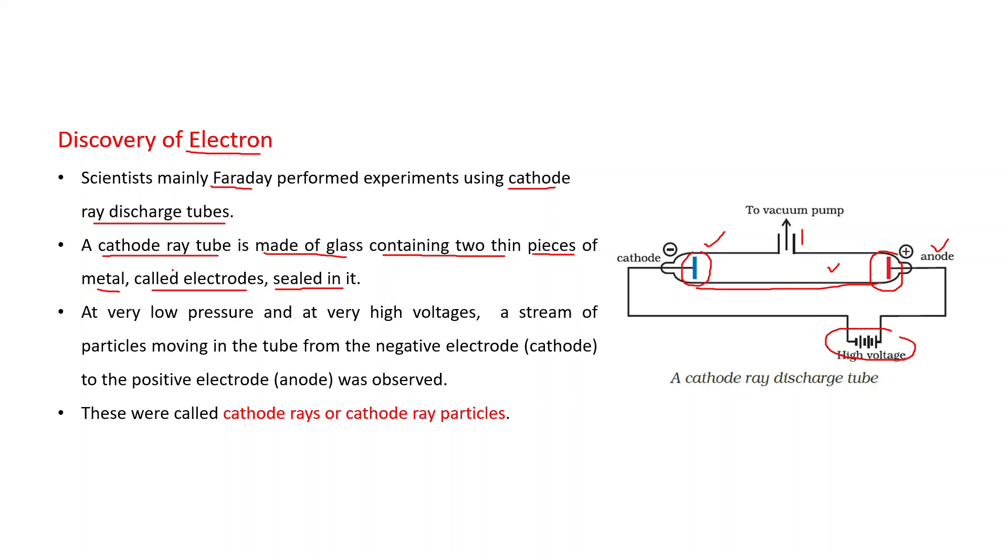At the normal pressure, that is when gas in the tube is at normal pressure and voltage is low, nothing is remarkable in this tube. But at very low pressure and at very high voltages, a stream of particles moving in the tube from the negative electrode to the positive electrode was observed. These stream of particles were called cathode rays or cathode ray particles. Actually, these rays were seemed to be coming from cathode. That's why they were named as cathode rays.